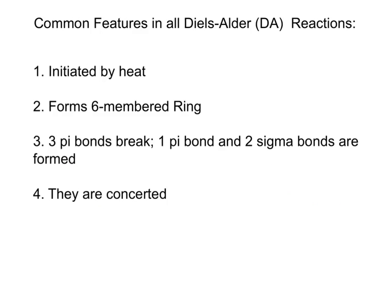Now for some common features about the Diels-Alder reaction. First, it is initiated by heat, which is considered a thermal reaction. Second, the reaction forms a new six-membered ring. Third, three pi bonds break, forming one new carbon-carbon pi bond and two new carbon-carbon sigma bonds. Also, the Diels-Alder reaction is concerted, meaning all bonds broken and formed occur in one single step.